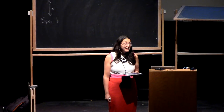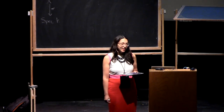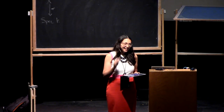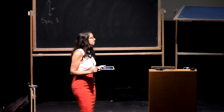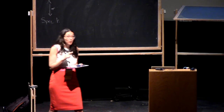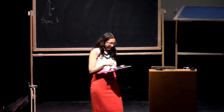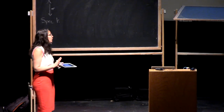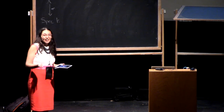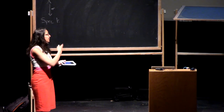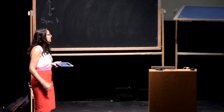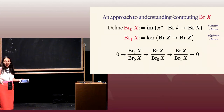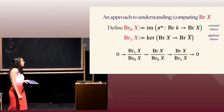Each piece in Br¹ still dies in a finite extension — that's right. Really we're interested in computing Br mod Br⁰. By definition we have a nice exact sequence where Br¹ mod Br⁰ injects, and then maps onto Br mod Br¹. So normally we think of dividing those two pieces.